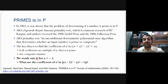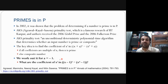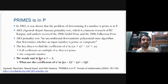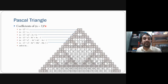We will work out the example where a equals minus one. We assume a = −1 and find the coefficients of x^i in the equation (x − 1)^n − (x^n − 1). We want to search the coefficient of x^i in this expression.